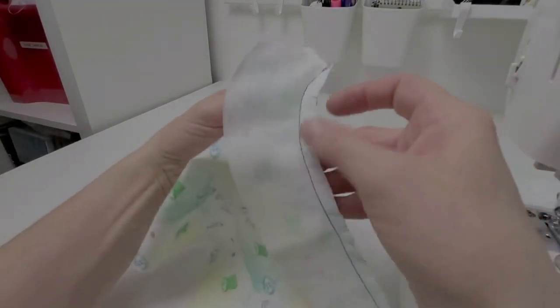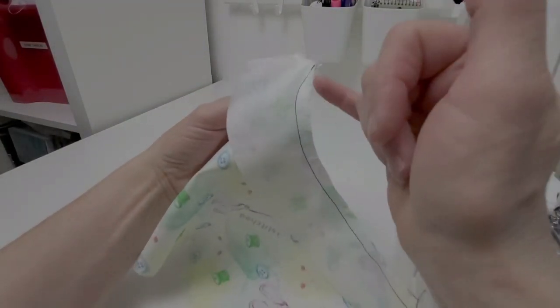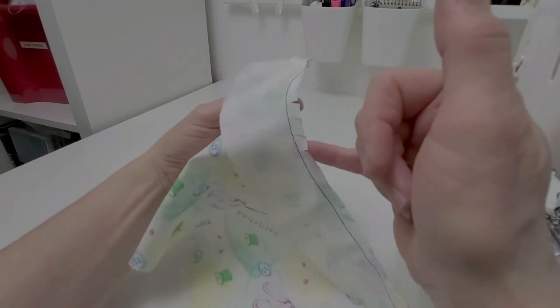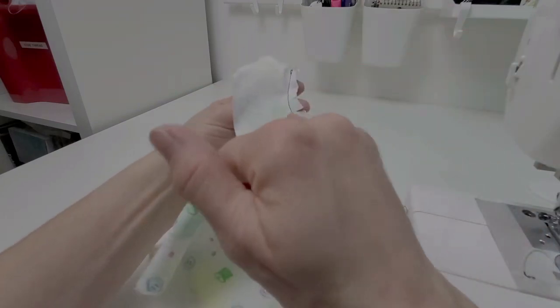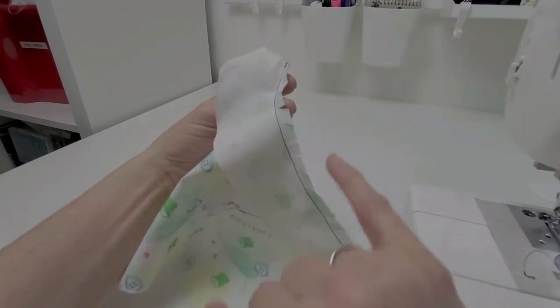I've got a curved piece around a facing. I've sewn it at a quarter inch seam allowance and clipped my curves. Now I'm going to understitch so that that facing stays to the inside and you don't see it rolling to the outside.